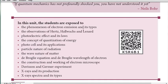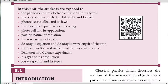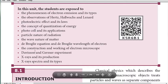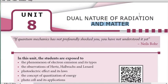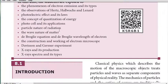The topics we will discuss include: the phenomenon of electron emission, the observations of Hertz, Hallwachs, and Lenard, the photoelectric effect and its laws, the concept of quantization of energy, the particle nature of radiation, the wave nature of matter, de Broglie's hypothesis and de Broglie wavelength of electrons, the construction and working of the electron microscope, X-rays and their production, and X-ray spectra and its types.